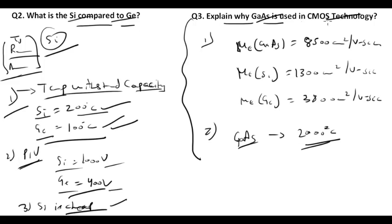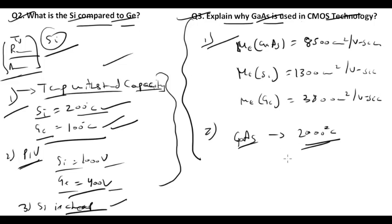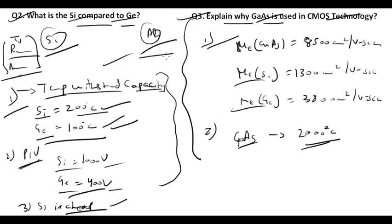These are the reasons why we do these theoretical questions — because objective-type questions are based on them in ISRO technical assistant exams. You can be asked about the mobility of silicon, germanium, or why gallium arsenide is used in CMOS technology. Assertion-reason questions can also come on these topics.